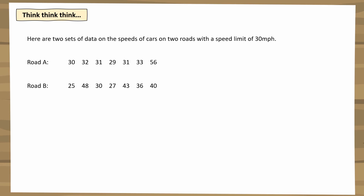Here are two sets of data on the speeds of cars on two different roads, both with a speed limit of 30 miles per hour. I've called them Road A and Road B. If I calculate the range of the speeds by doing the highest value subtract the lowest value, I get the range on Road A is 26 and the range on Road B is 23.